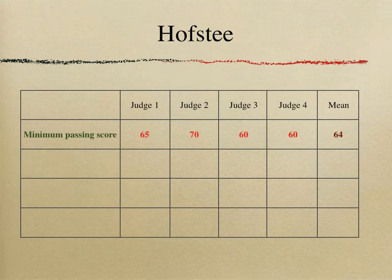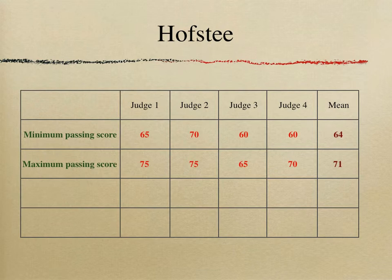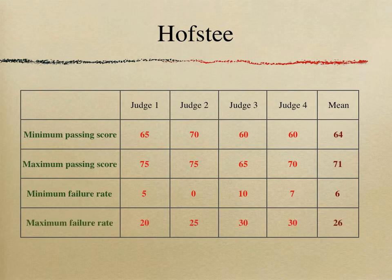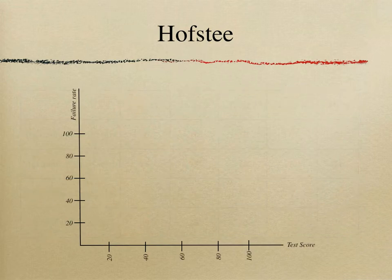Imagine you have a panel of four judges. For the first question — minimum pass score — each judge gives a score and the mean is calculated; in this example it comes to 64%. For the question of maximum pass score above which everybody will pretty much pass, each of the four judges gives their opinion and an average is calculated. The same process applies for the minimum failure rate and the maximum failure rate of the exam.